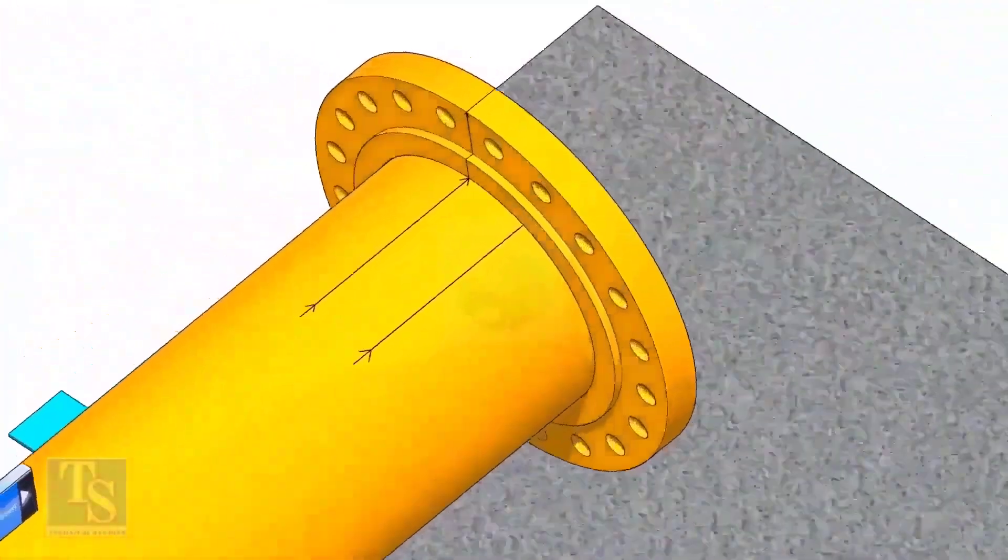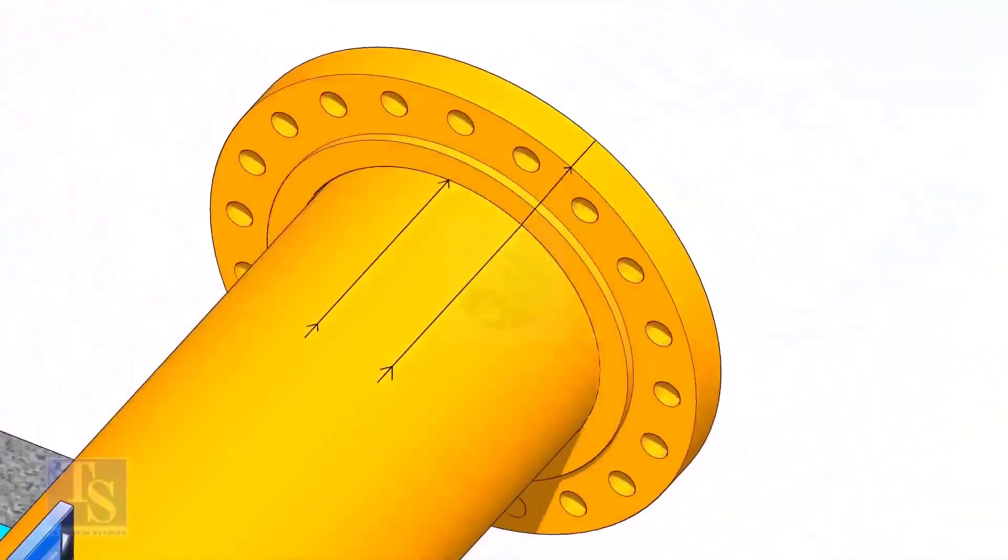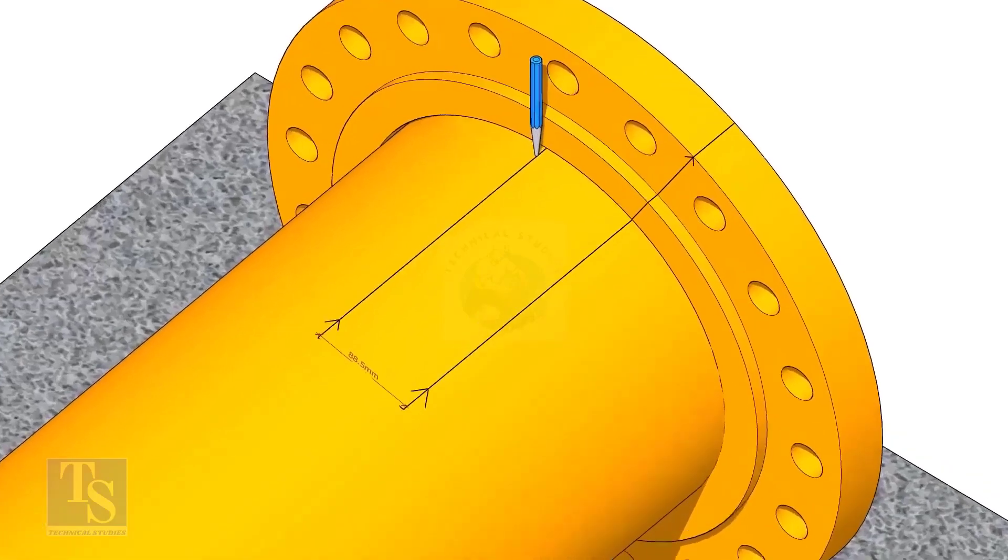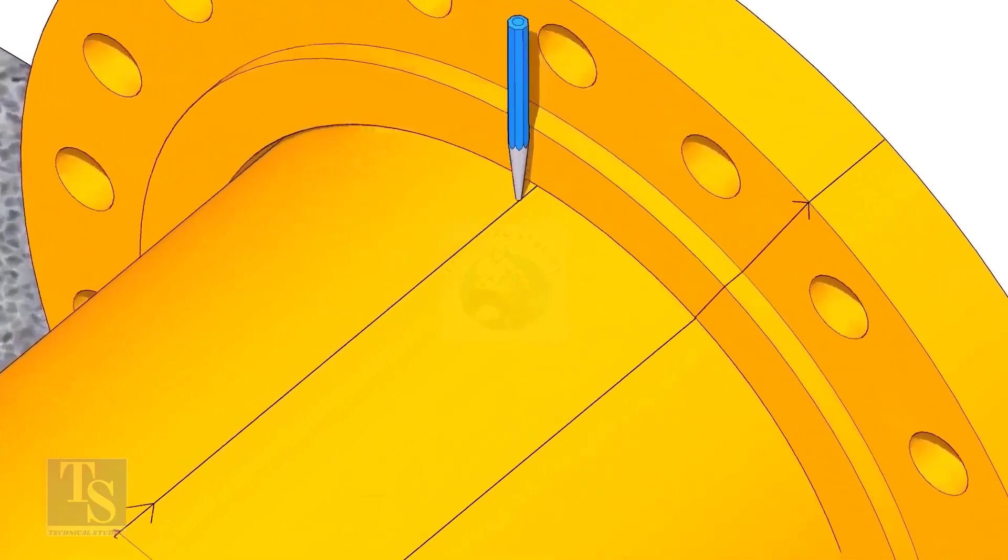Put the flange on the pipe. Rotate the flange until the center line on the flange and the 25 degree line on the pipe comes in a line. Don't forget to punch mark the center lines.